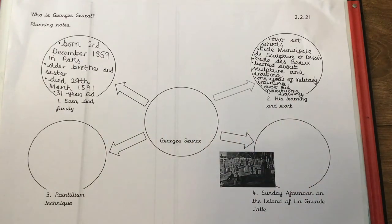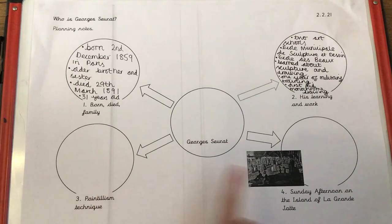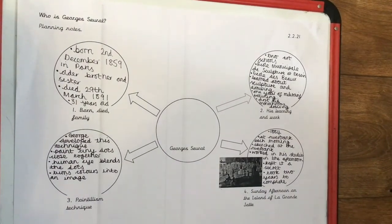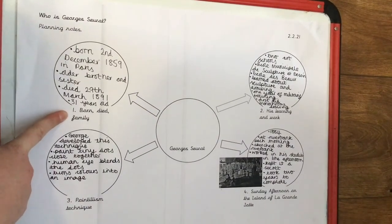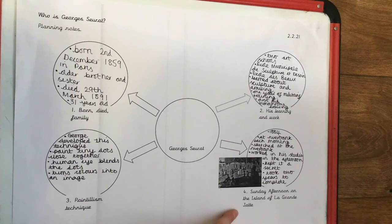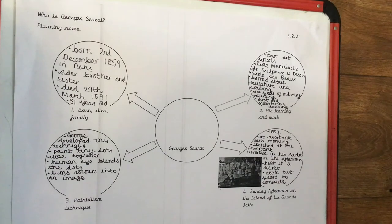So what you can do now is have a read through the fact file, you can also watch the video all about him, and see if you can fill in some key facts to go in each of the other two sections. Here I have completed my organiser with all the important facts — about his family, when he was born and when he died, his learning and work, his pointillism technique, and his famous painting. I've just written a few words as bullet points to help me when I write my fact file later in the week, so it's important you do this so that later in the week you can write sentences about him.